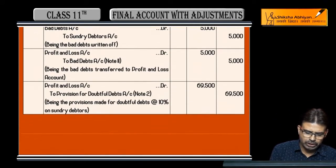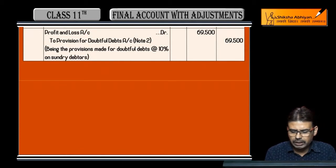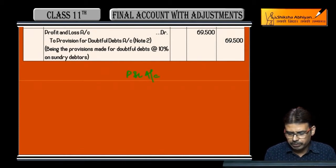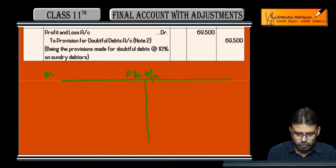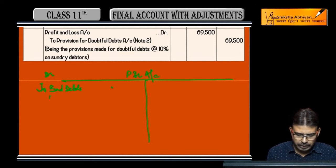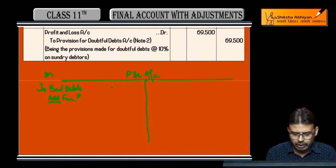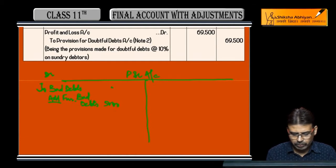So I will do this in formula shape. On the P&L account debit side: two bad debts — not given in this question. Add further bad debts, i.e., 'you are required to write off' further bad debts — 5,000.